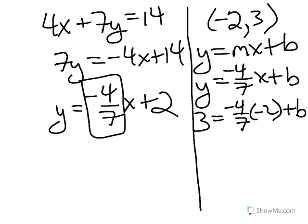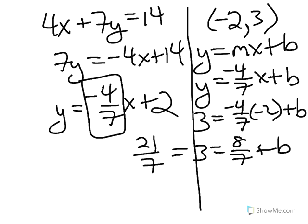On the right-hand side, take -4/7 times -2, and you've got positive 8/7. 8/7 plus b, then, is 3. Well, 3 is also equal to 21/7 if you get a common denominator. Knowing that, we can subtract 8/7 from both sides and find out that b = 13/7.